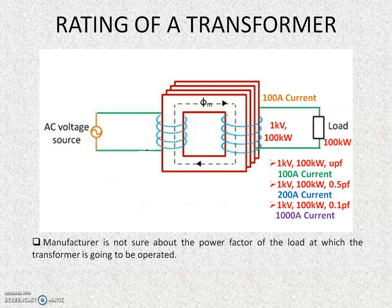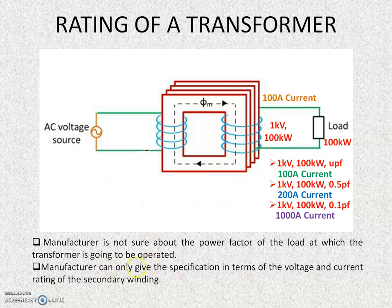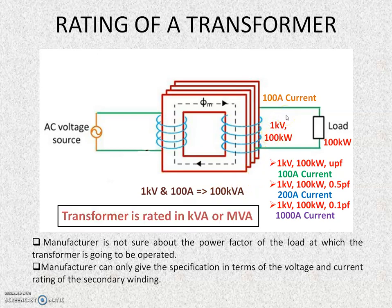This is the issue with rating a transformer in kilowatts. Therefore, the rating of a transformer is not specified in kilowatts. Instead, the manufacturer specifies the rating in terms of the voltage and current rating of the secondary winding — here it is 1 kV and 100 amperes — and this can be combined to give 100 kVA, which is the apparent power. The transformer is rated for the apparent power being transferred from primary to secondary.